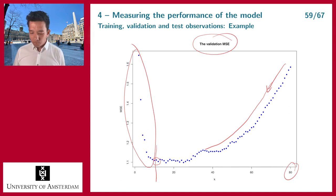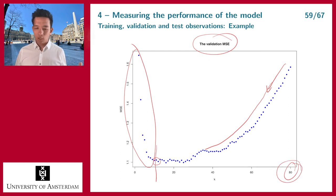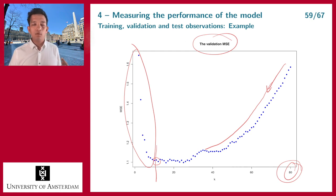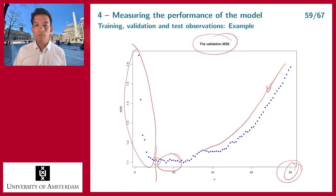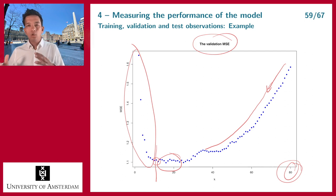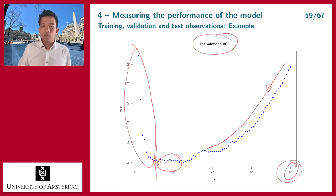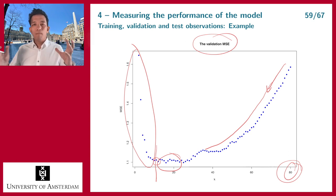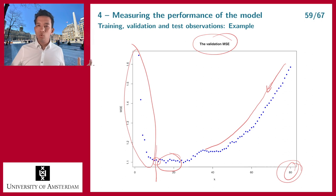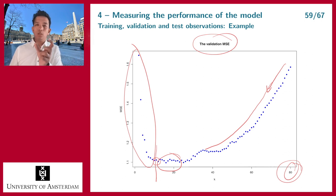For large k you are too general and not specific enough; for very small k you are too specific to your training data. The optimal value for k is somewhere in between — around 20 in this case. There you have a good balance: using enough data so you are not overfitted to the training set, but not so many that your predictions are too general for the region you are examining.